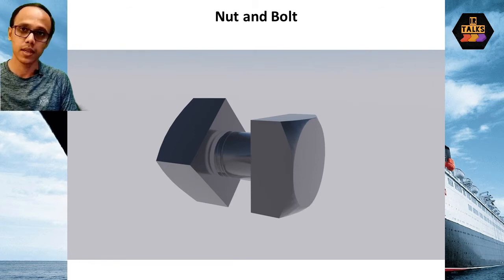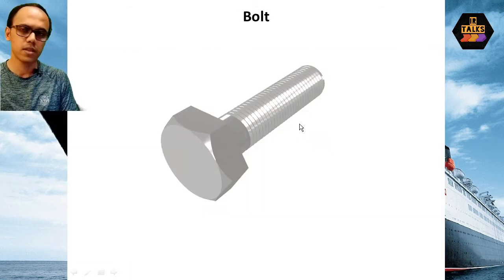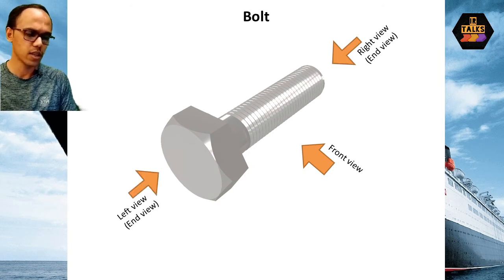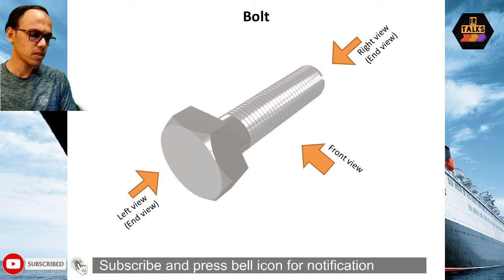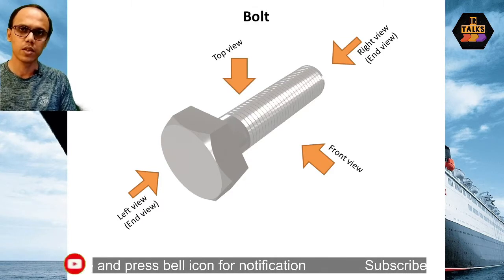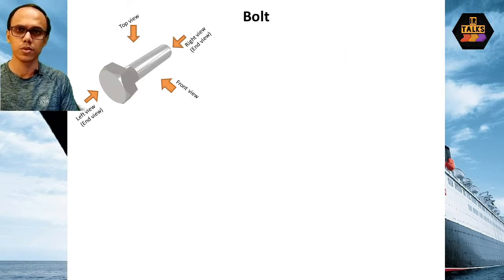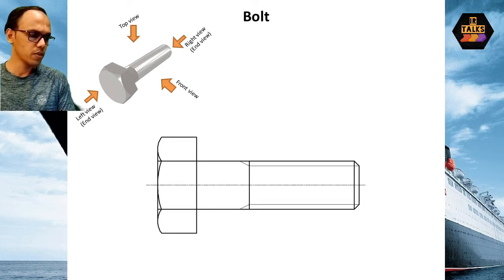In the previous video, you can use the views. Suppose it is a hexagonal bolt — in this case it is a square bolt. In this view, we can use the front view. Then the end views: if we have two sides we can use the end view — one right side view and one left side view. Then there is a top view. If we have a top view, we can use the top view. So we can use the front view.